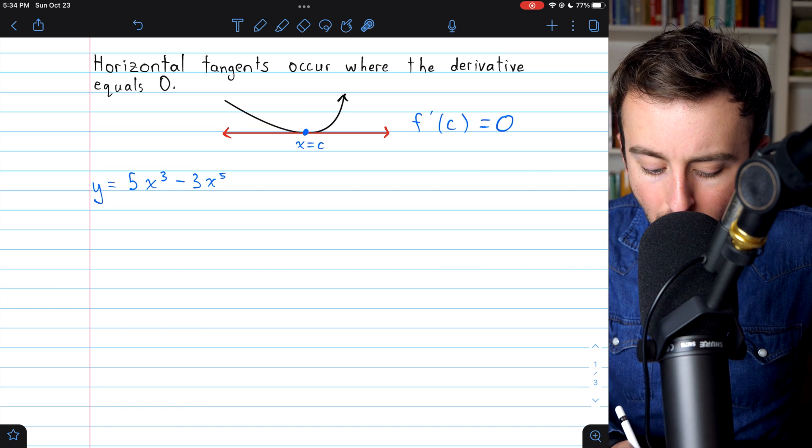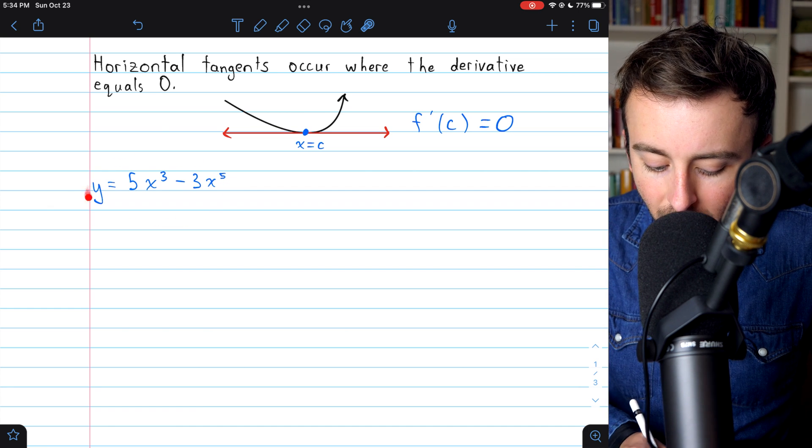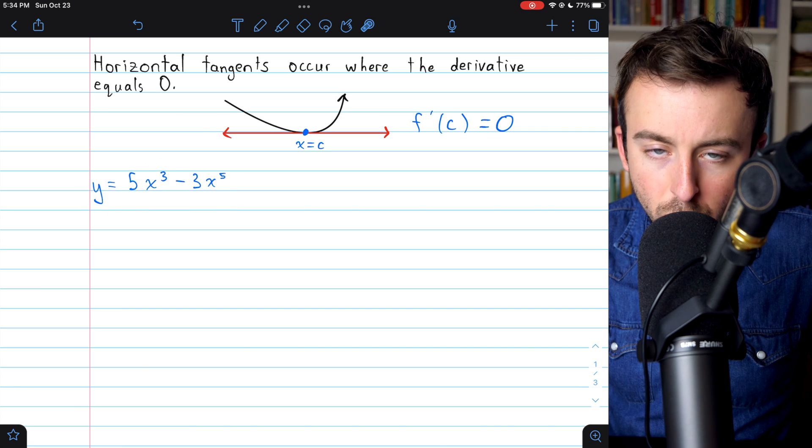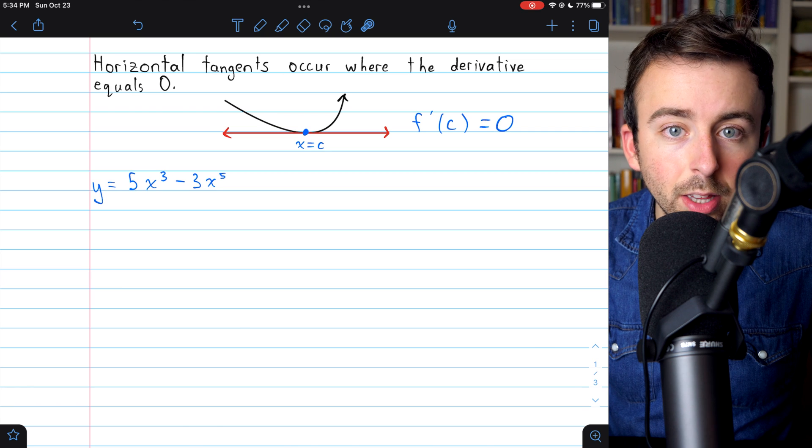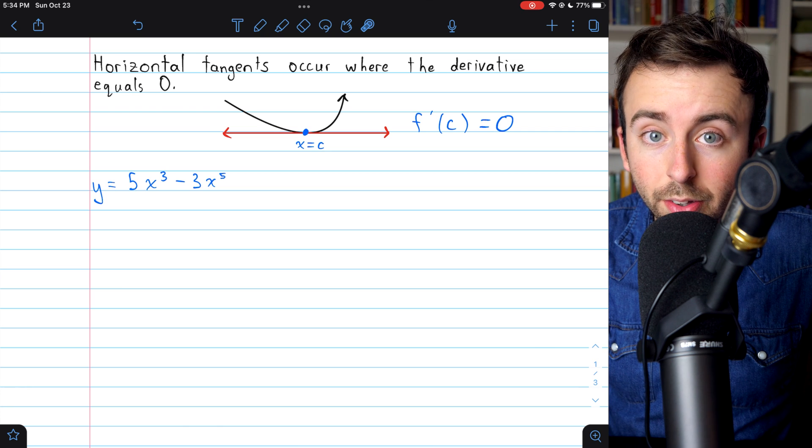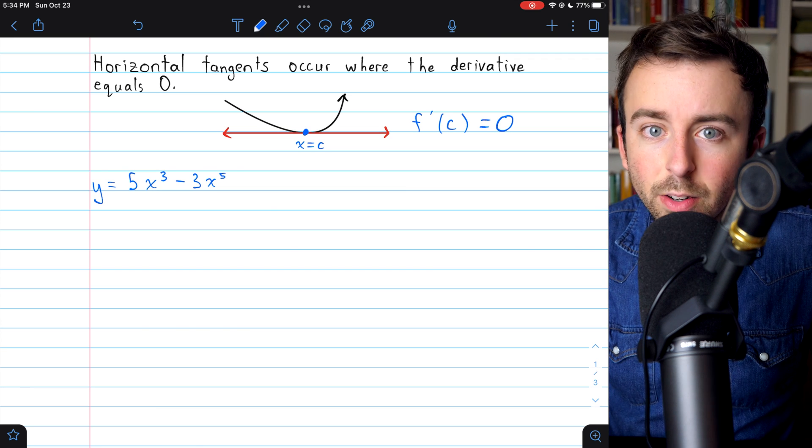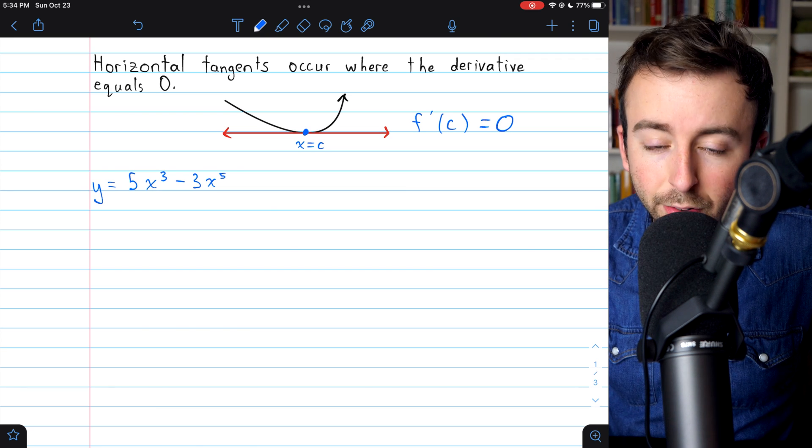So here's our first example. We want to find all the horizontal tangents to this curve, y equals 5x cubed minus 3x to the 5th. To find the horizontal tangents, we need to first take the derivative, and then set that derivative equal to 0, and solve.